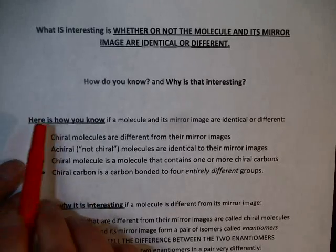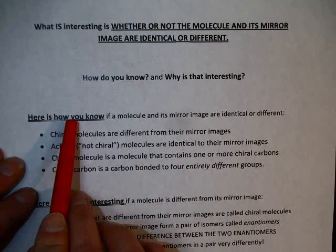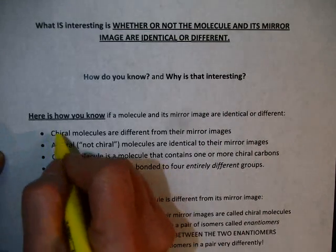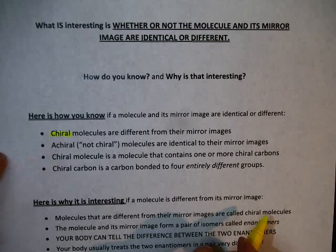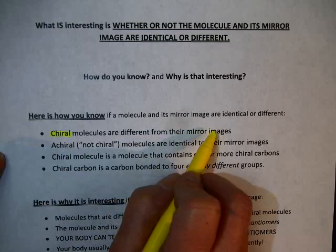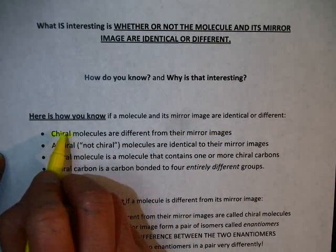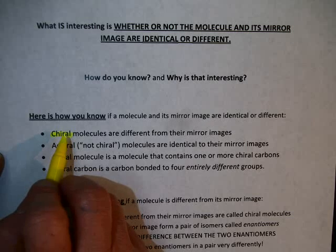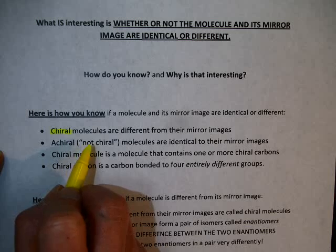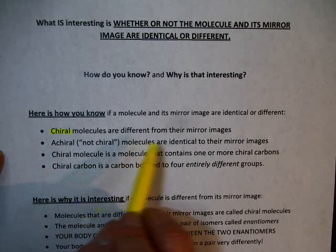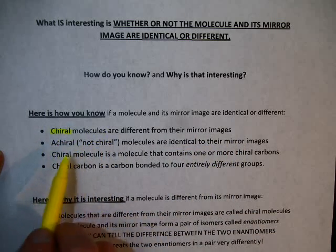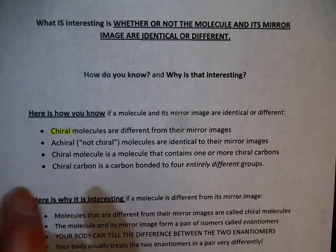Here's how you'll know if a molecule and its mirror image are identical or different. We introduce the word 'chiral.' A chiral molecule is one that will be different from its mirror image. Achiral means not chiral — an achiral molecule will be identical to its mirror image. So chiral means they're different; achiral means the molecule and its mirror image are identical.